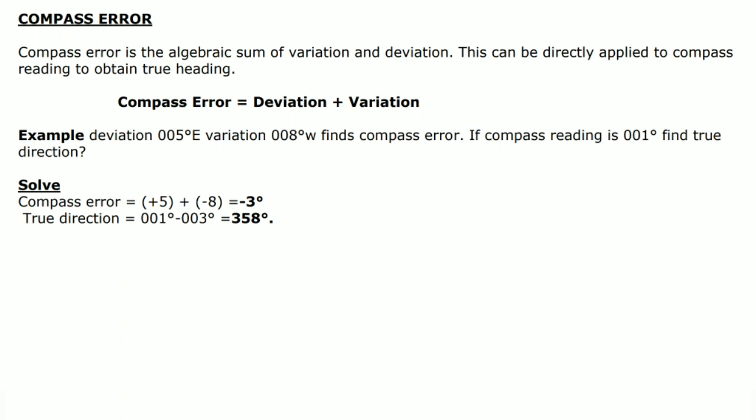Compass error is the algebraic sum of variation and deviation — remember, here it is an algebraic sum. This can be directly applied to a compass reading to obtain true heading. So: compass error = deviation + variation.